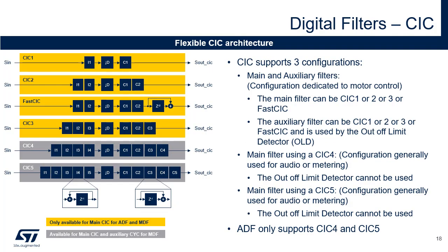The abbreviation CIC stands for cascaded integrated comb filters. MDF contains a single flexible CIC filter that can either be split into two filters — the auxiliary and main filter — or used as a single main filter. CIC supports three configurations: main and auxiliary filters, dedicated to motor control. In this configuration, the main filter can be CIC1, CIC2, CIC3, or FAST CIC. The auxiliary filter can also be CIC1, 2, 3 or FAST CIC and is used for the out-of-limit detector or OLD. The CIC filter can also be configured as a single main filter in CIC4 or CIC5. Those two configurations are generally used for audio or metering applications. In this case, the out-of-limit detector cannot be used. Note that ADF only supports CIC4 and CIC5 configurations.